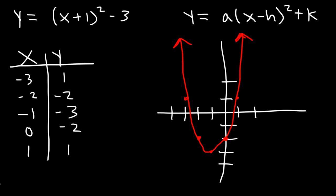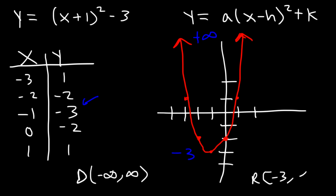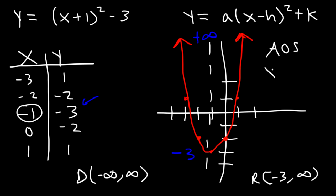Now go ahead and find the domain, the range, the axis of symmetry, and the maximum or the minimum value. The domain, for any quadratic functions, is all real numbers, negative infinity to infinity. For the range, let's identify the lowest y value, which is basically the y-coordinate of the vertex. It's negative 3, and the highest is infinity. So the range is from negative 3 to infinity, including negative 3. The axis of symmetry is simply the x-coordinate of the vertex, so the AOS is x equals negative 1. And because the graph opens upward, there's going to be a minimum value, which is the y-coordinate of the vertex. The minimum value is negative 3.